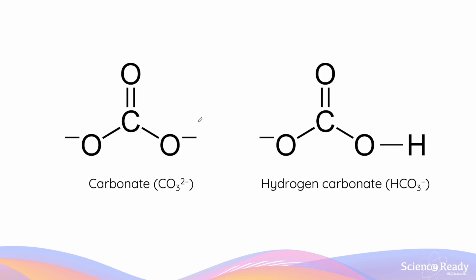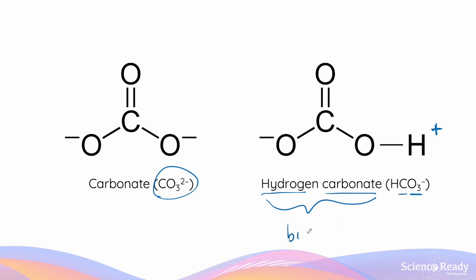Carbonate is also a very common polyatomic ion. It contains a carbon atom bonded to three oxygen atoms, two of which are negatively charged. The oxygen atom that is not charged has a double bond with the carbon atom, giving carbonate the formula CO3 2-. One of the negatively charged oxygen atoms can form a covalent bond with a hydrogen ion, forming a new polyatomic ion called hydrogen carbonate. The carbon and oxygen atoms remain the same — HCO3 — but adding H+ reduces the two minus charge by one, giving an overall charge of minus one. So the formula is HCO3-. Hydrogen carbonate is commonly known as bicarbonate.